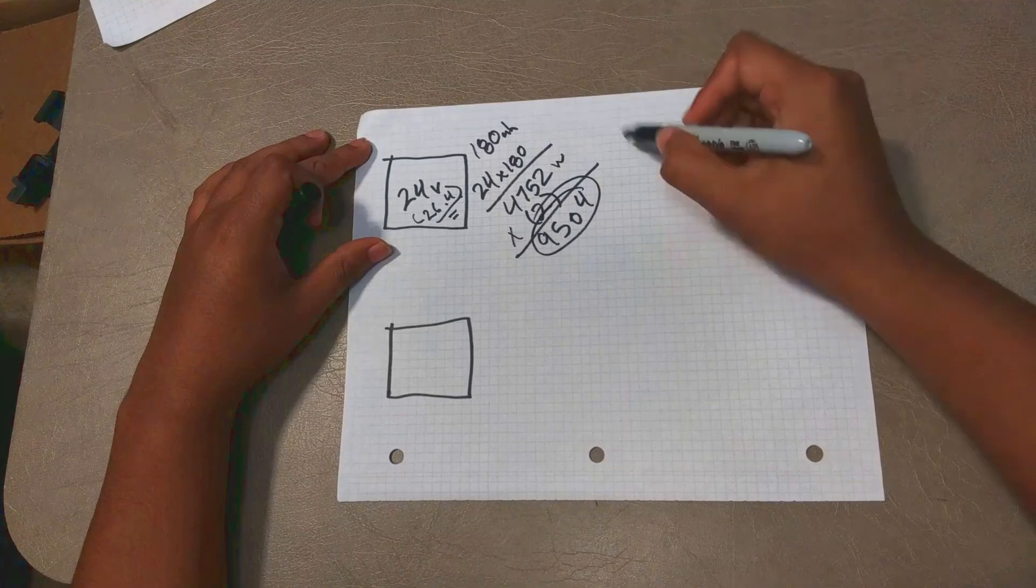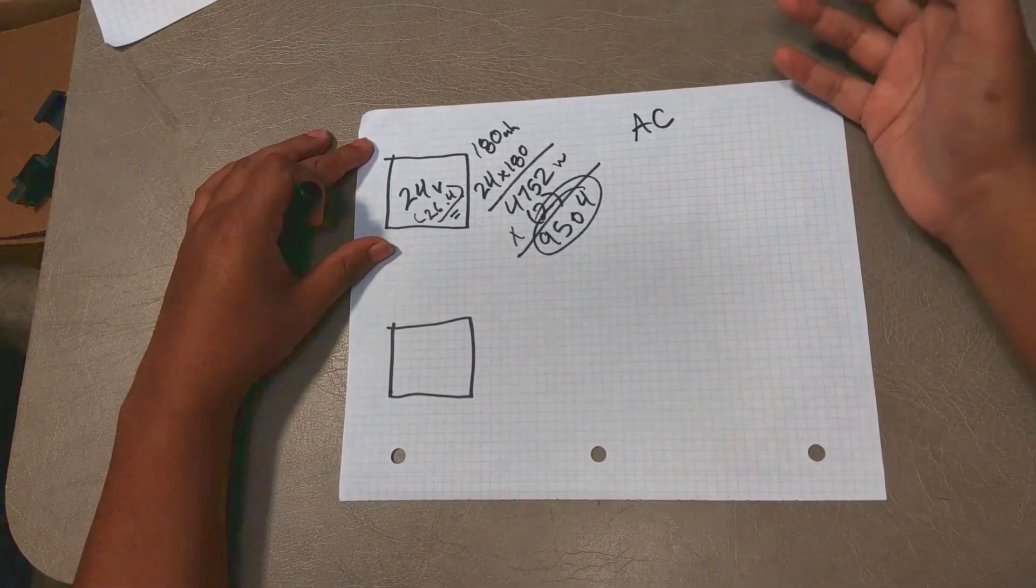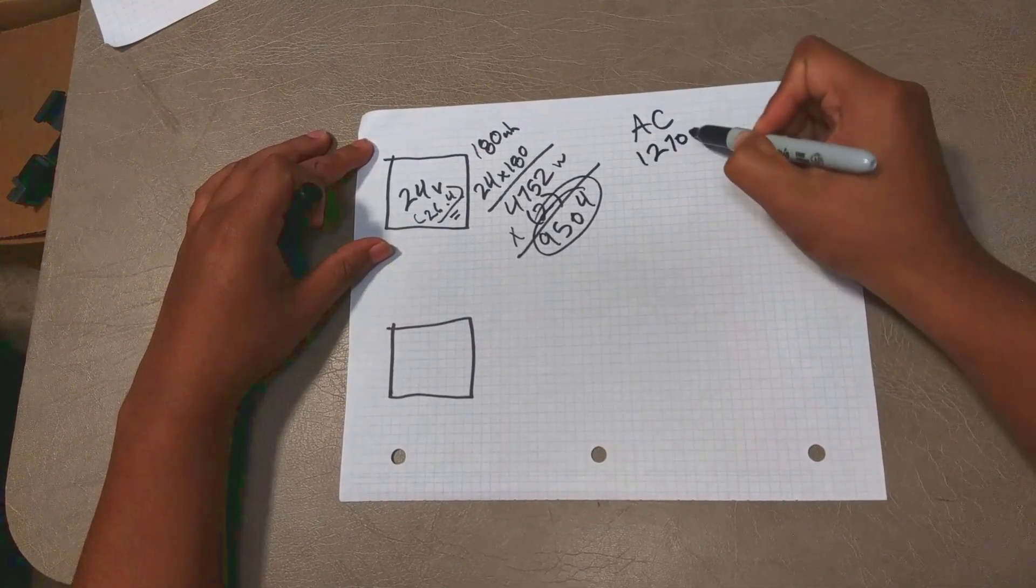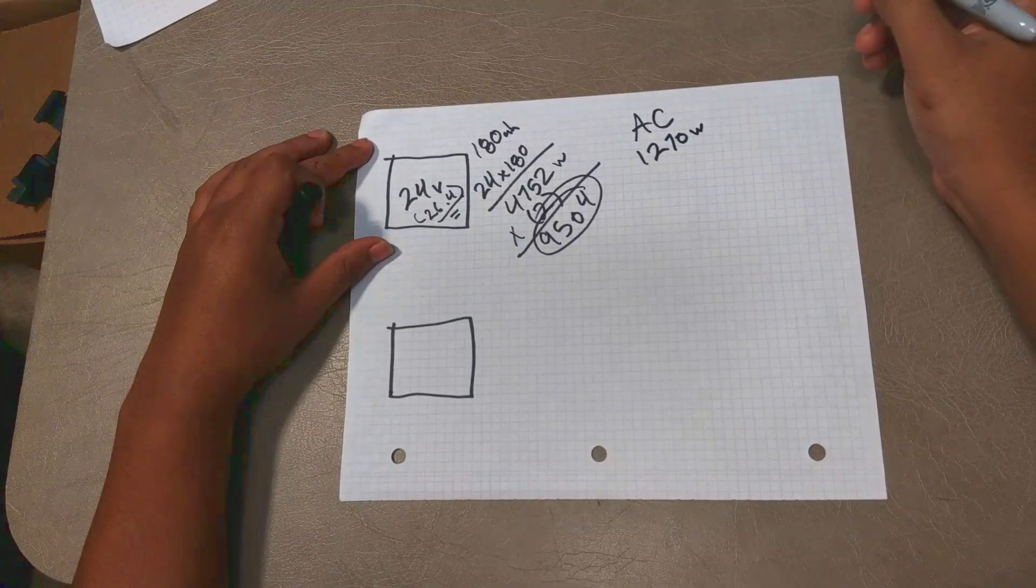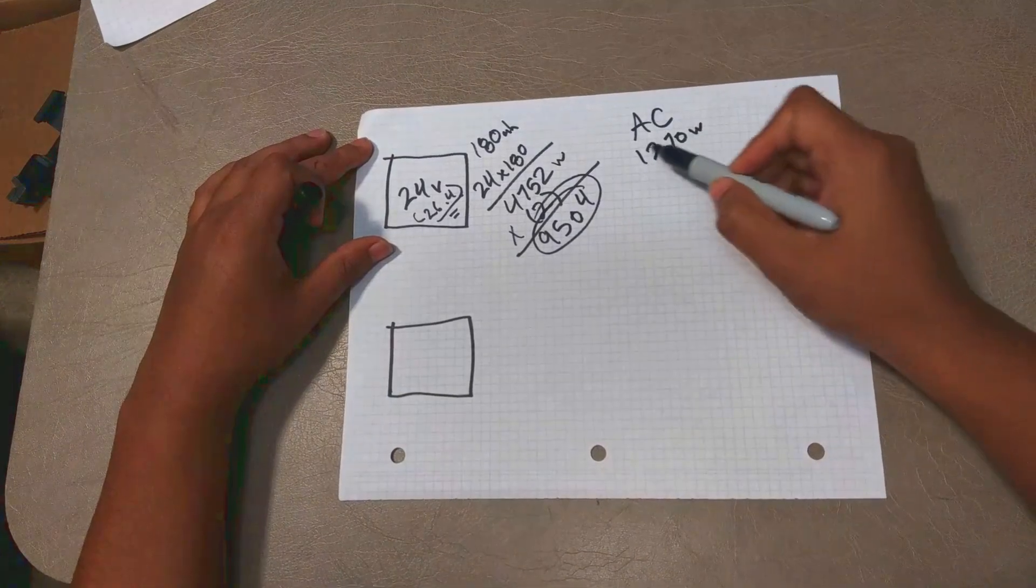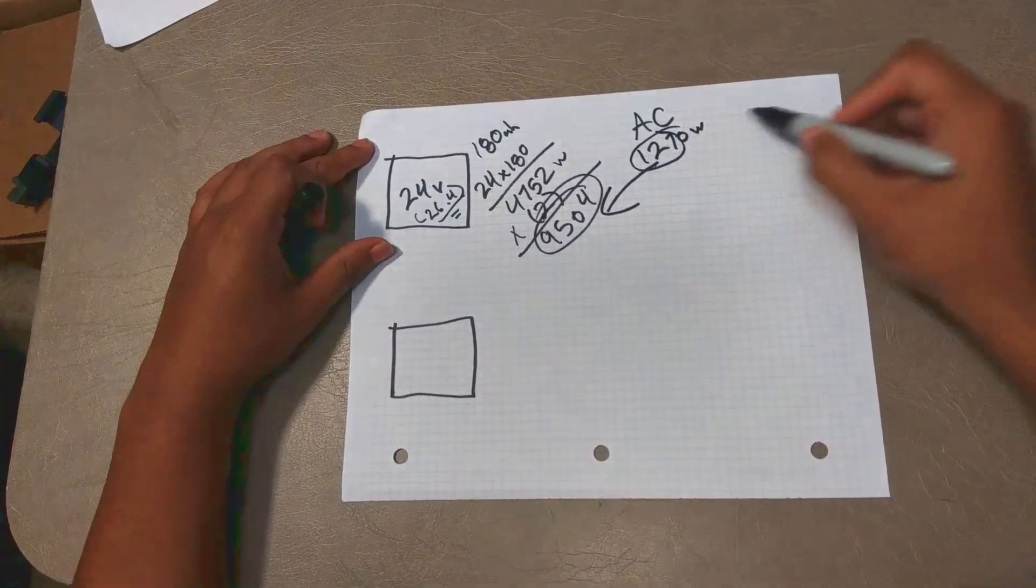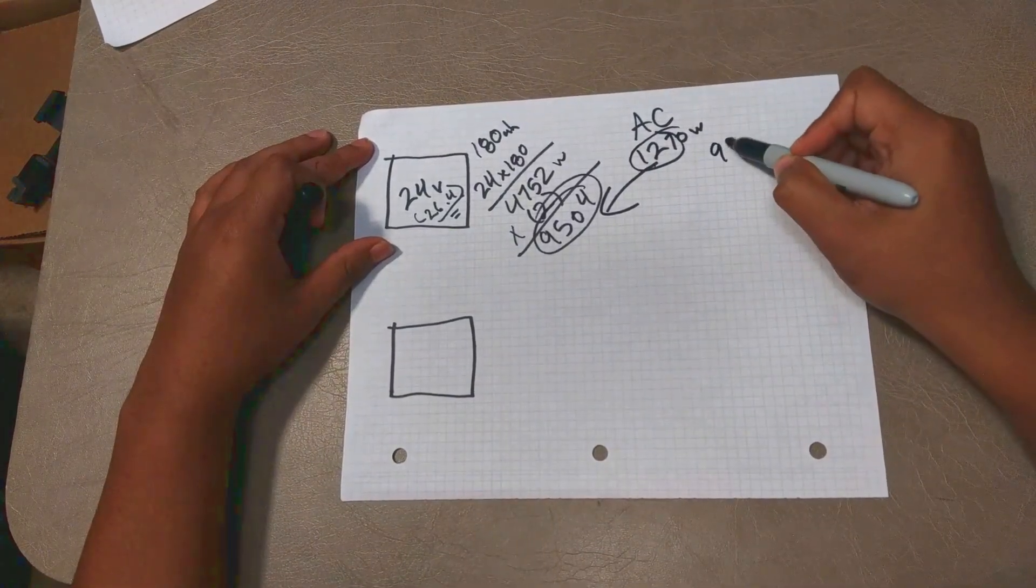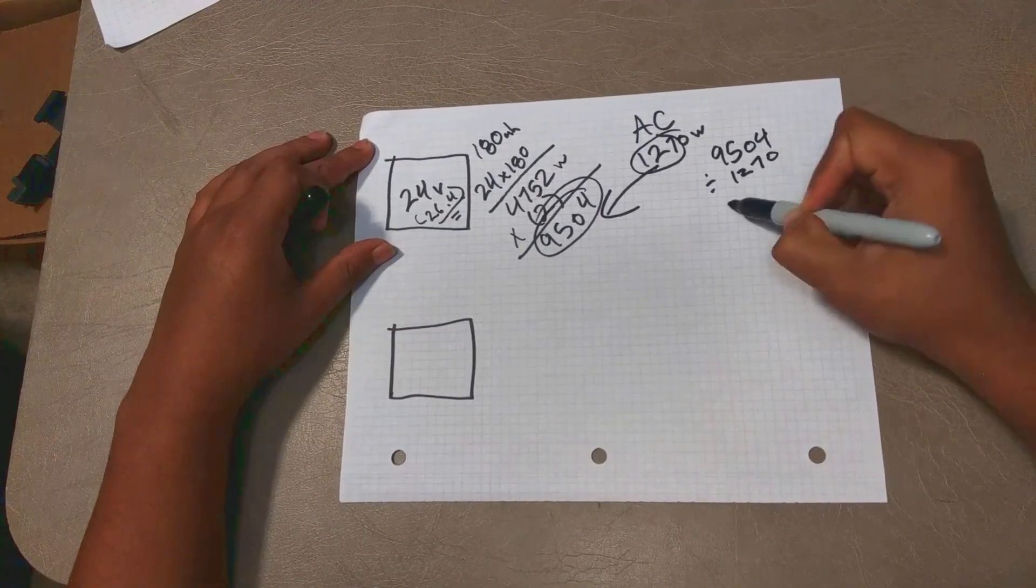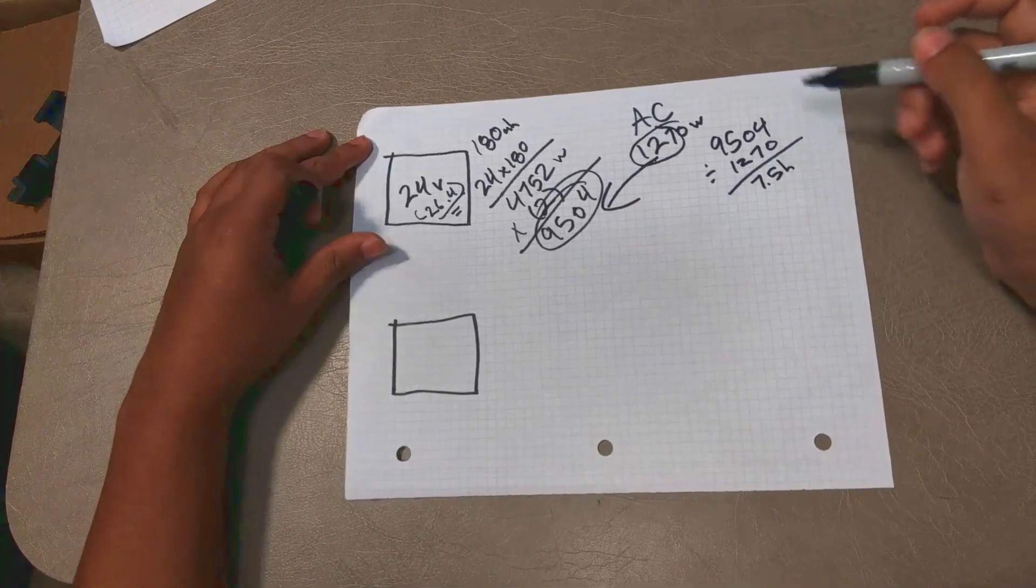So now you take an appliance like the AC and then you figure out how many watts it takes for it to run and we found out that our AC takes 1270 watts when it's running. So now what you do is you figure out how many times does 1270 go into this number, our total amount of watts, and if you do the division you find out that we can run our AC for roughly 7.5 hours.